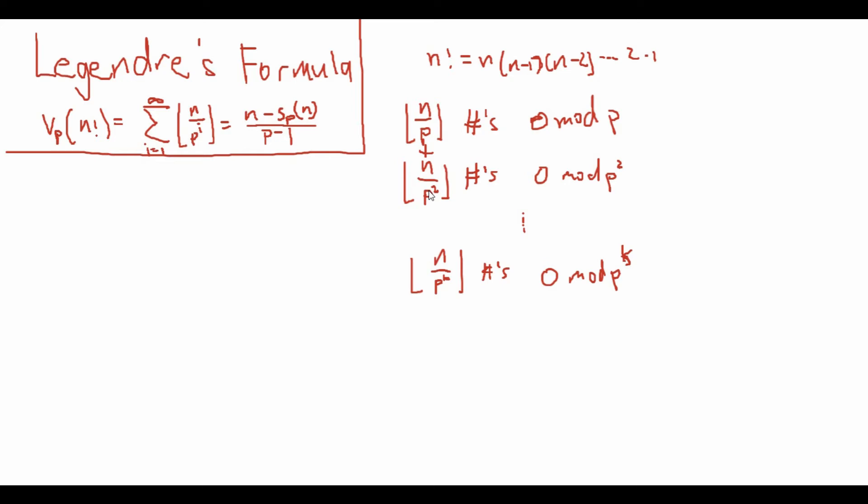Because we only counted their factor of p once when they have two factors of p. So we add this floor of n over p squared. And continuing on like this, we see that for each progressive power of p, we have to add on that extra to make sure that that factor of p in that number is also counted. So in the end, we just obtain that vp of n factorial is equal to the sum from i equals 1 to infinity of the floor of n over p to the power of i. And we're done with the first equation.